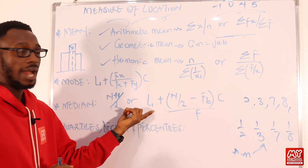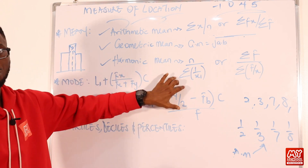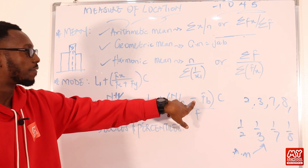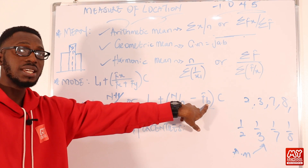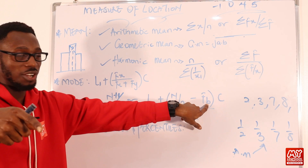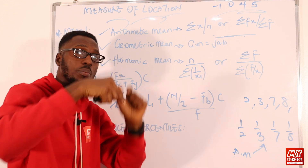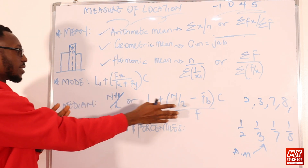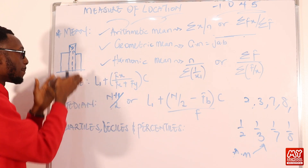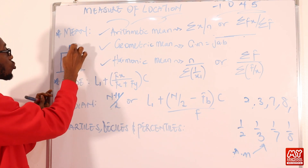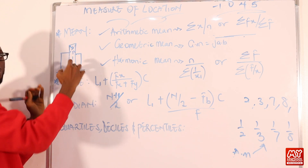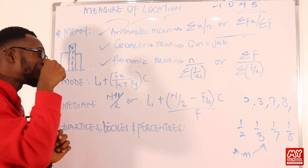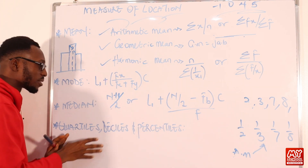For grouped data, the median formula is: L + [(n/2 − F) / f] × h, where L is the lower class boundary of the median class, n/2 is half the total frequency, F is the cumulative frequency before the median class, f is the frequency of the median class, and h is the class width. To find the median from a histogram, locate the tallest bar and draw a vertical line under specific conditions, which will be explained further in the full video.